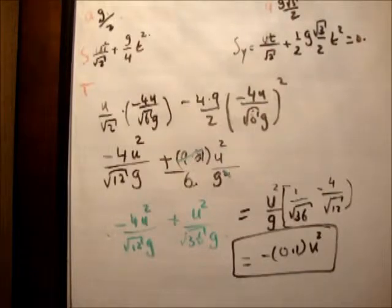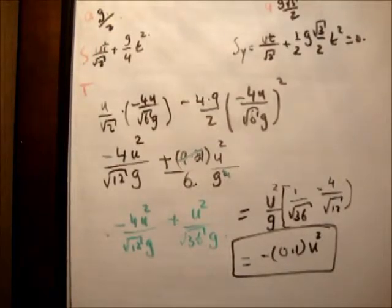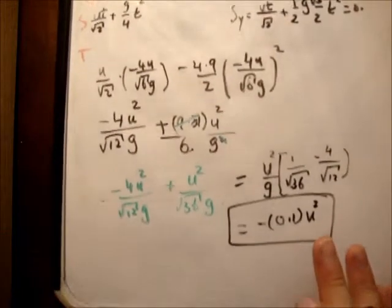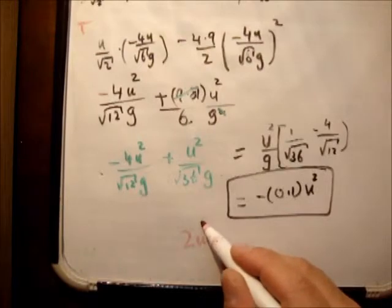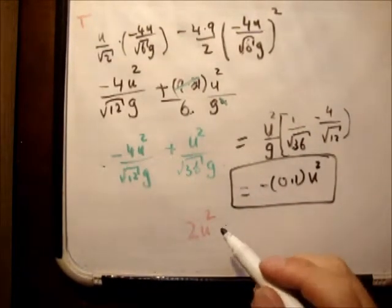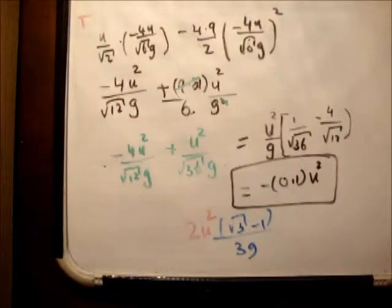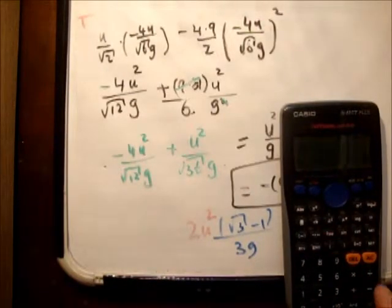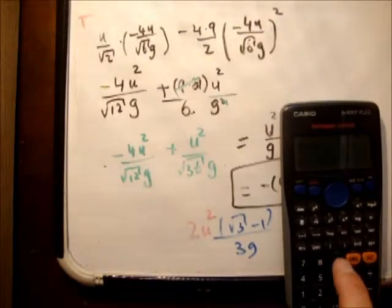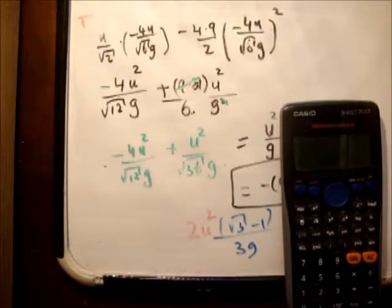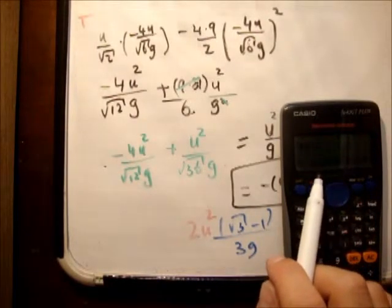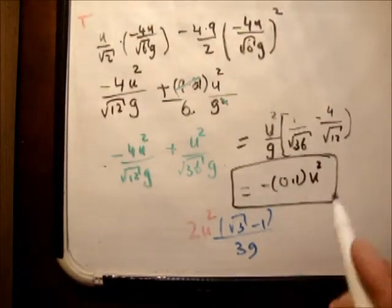Let's verify this against the back of the book. For question 3 of exercise 3C, the book gives the answer as 2u squared times (root 3 minus 1) over 3g. Computing root 3 minus 1 divided by 3 divided by 9.81 multiplied by 2 gives approximately 0.049, which is equivalent to 0.1 divided by u squared. That matches what we found, so the range calculation is correct.